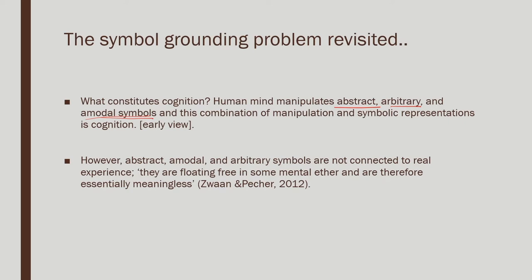Since the mind stores various kinds of symbols and manipulates them in various combinations, that ultimately results in what we call cognition. That is basically the early view of what is called disembodied cognition. However, the problem with this idea is that abstract, amodal, and arbitrary symbols are not really connected to the real experience — they are abstractions of what has happened.